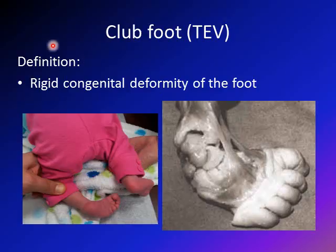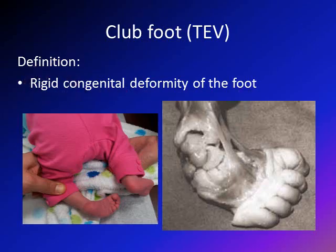The definition of clubfoot, or Talipes equinovarus: it is a rigid congenital deformity of the foot. It has to be rigid — it cannot be corrected by the examiner — and it is congenital, meaning the child is born with this foot deformity.